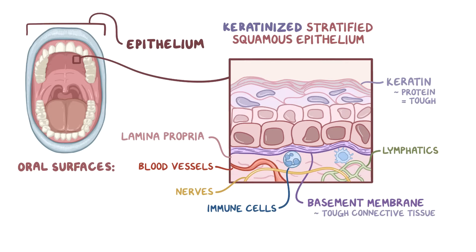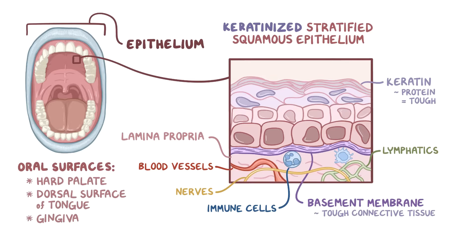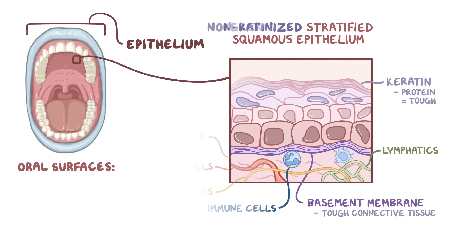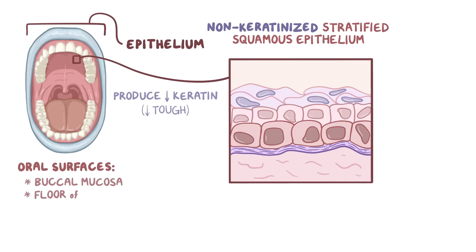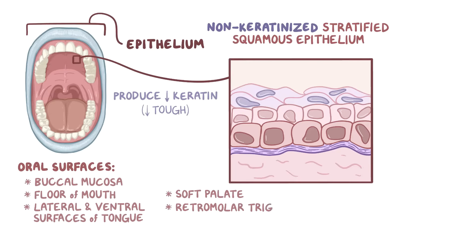The oral surfaces covered in keratinized epithelium include the hard palate, the dorsal surface or top of the tongue, and the gingiva. A second type of epithelium is non-keratinized stratified squamous epithelium, and it contains cells that don't produce much keratin, making this layer less tough. The oral surfaces covered by non-keratinized stratified squamous epithelium include the buccal mucosa, the floor of the mouth, the lateral and ventral surfaces of the tongue, the soft palate, and the retromolar trigone.